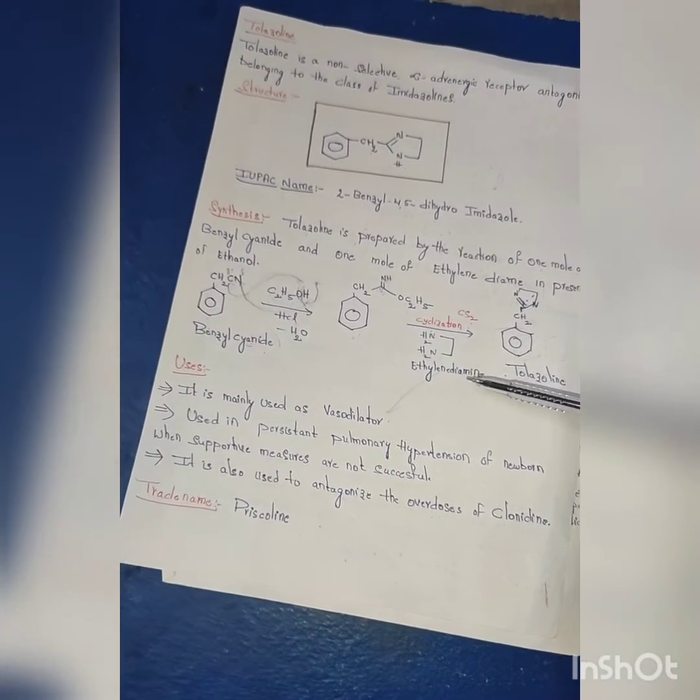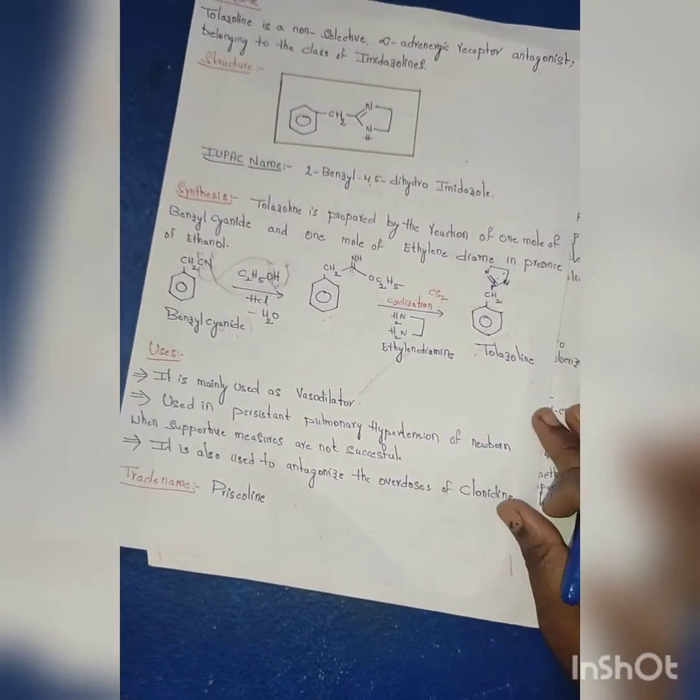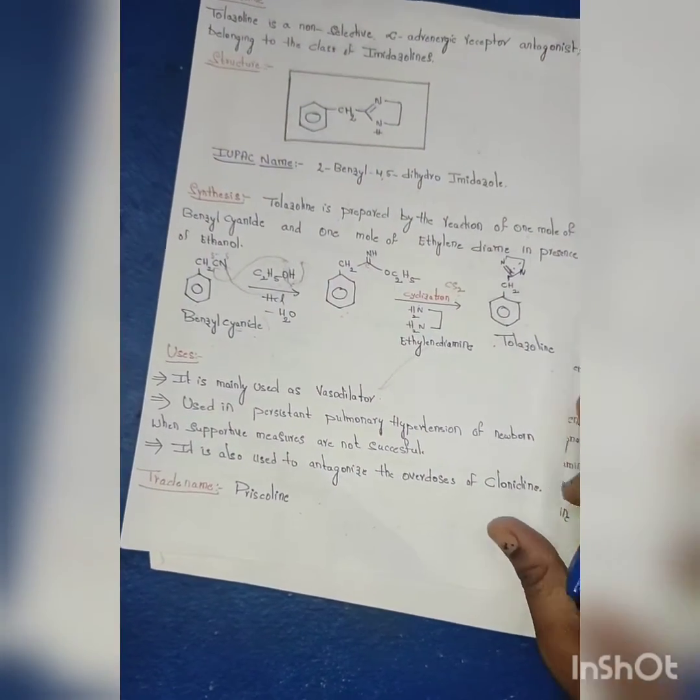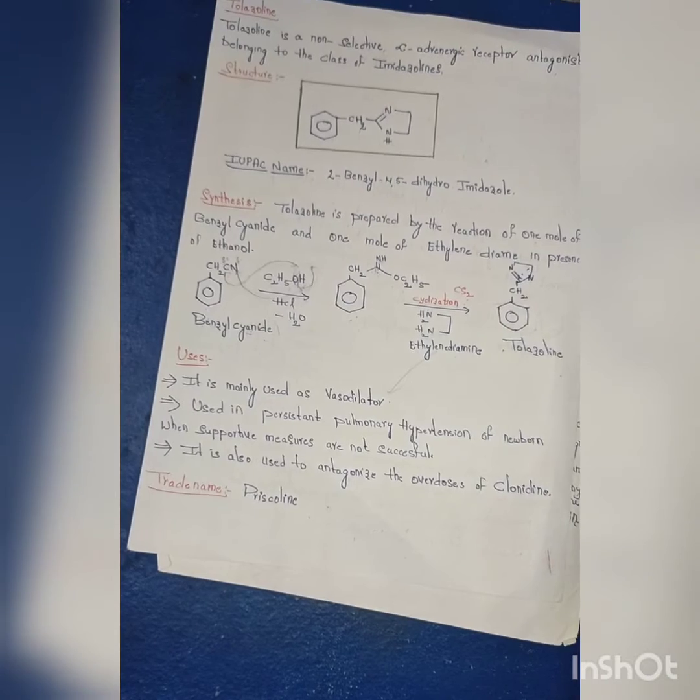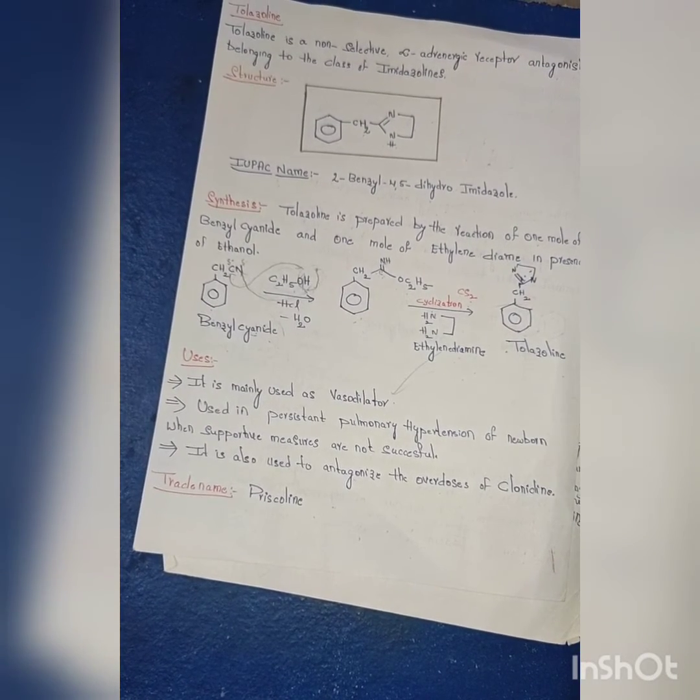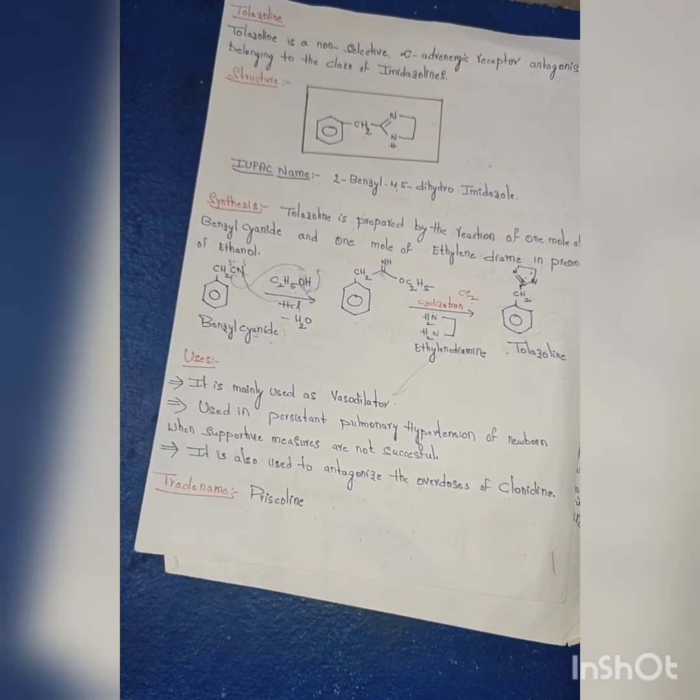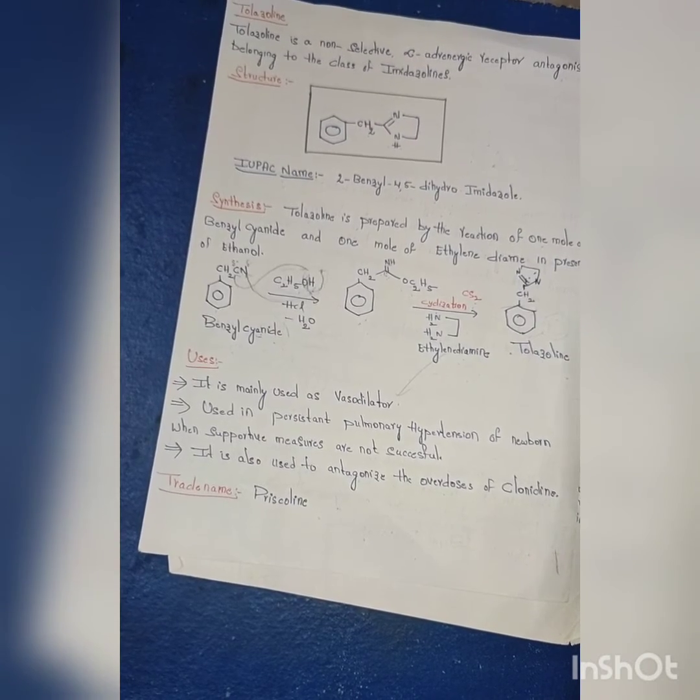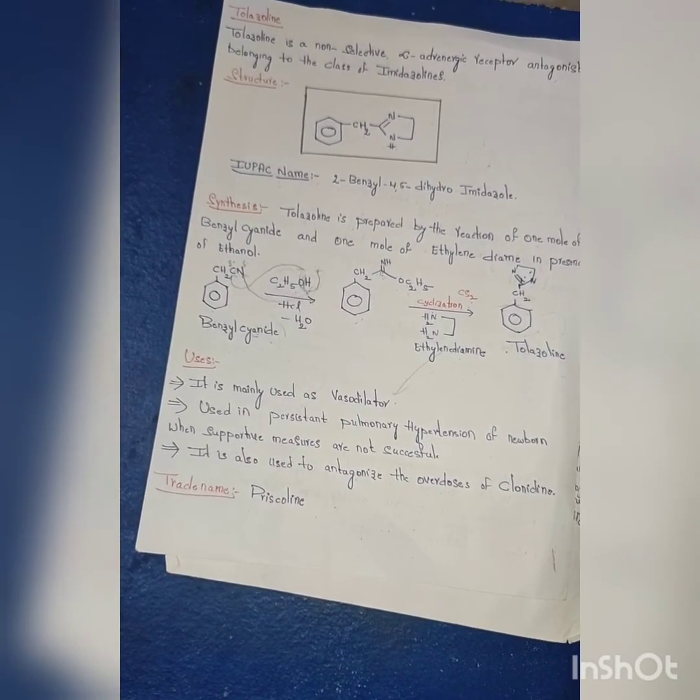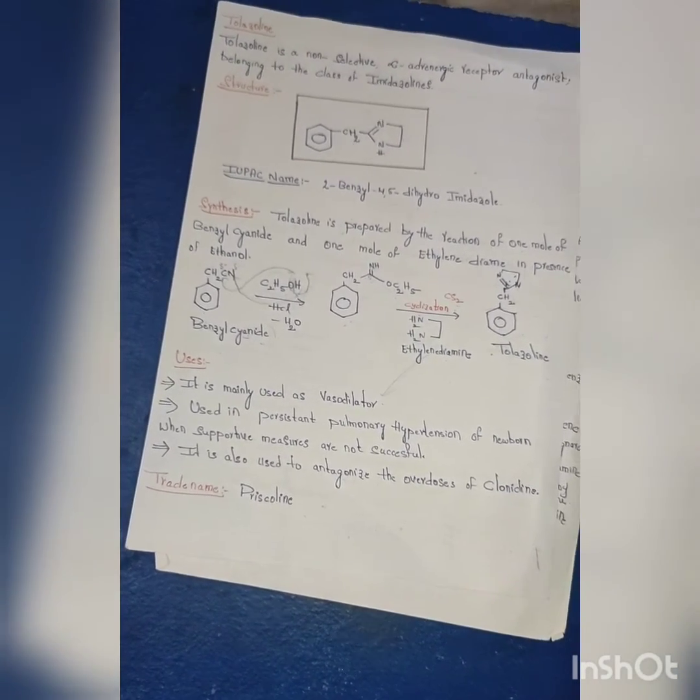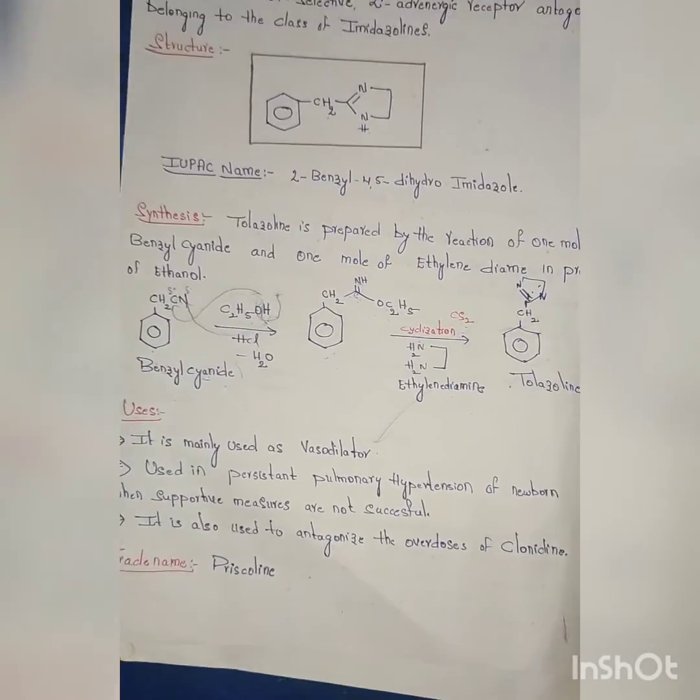Now coming to the uses: it is mainly used as a vasodilator, used in persistent pulmonary hypertension of the newborn when supportive measures are not successful. It is also used to antagonize the overdose of clonidine. So this is all about the synthesis of tolazoline.